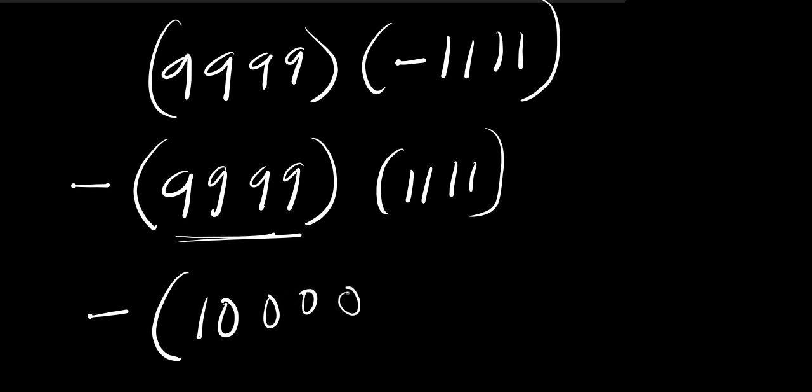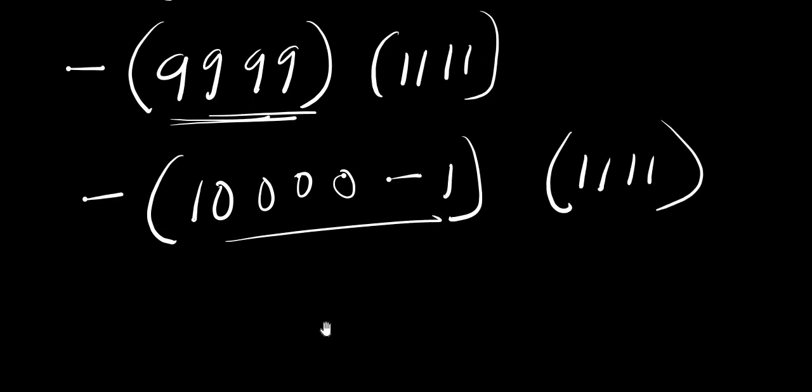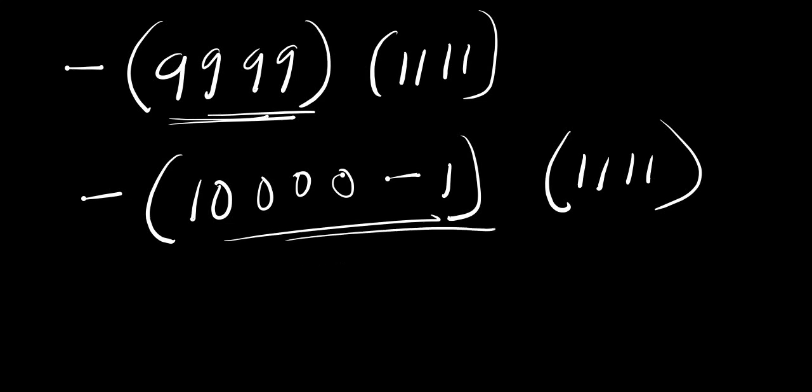The next thing you are going to do is to multiply everything out. 1111 times 10000. Now if you multiply this by 1 you are going to have 1111, then you multiply it with these zeros, you are going to have four zeros.